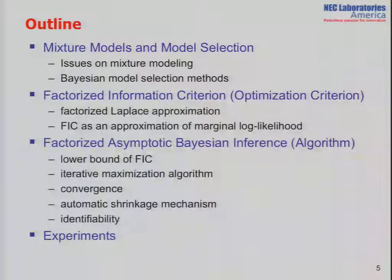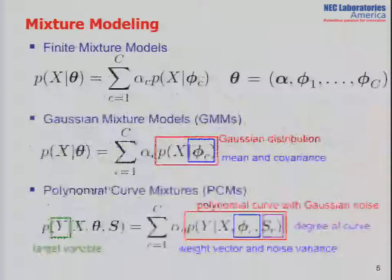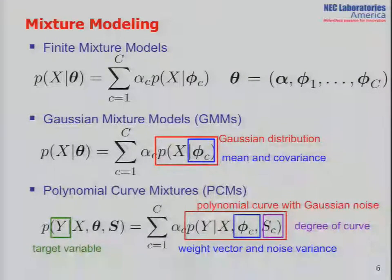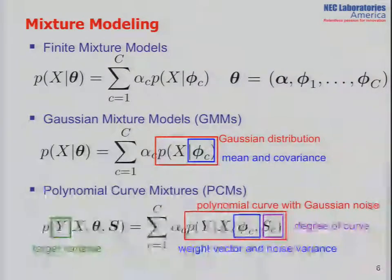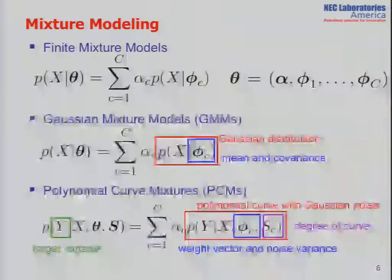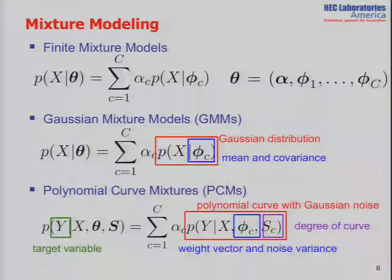Let me start from mixture models and model selection. This talk focuses on finite mixture models, not infinite non-parametric Bayesian. A typical example is Gaussian mixtures. Each component has its own model dimensionality — for example, we can mix a first-order line and a quadratic curve.